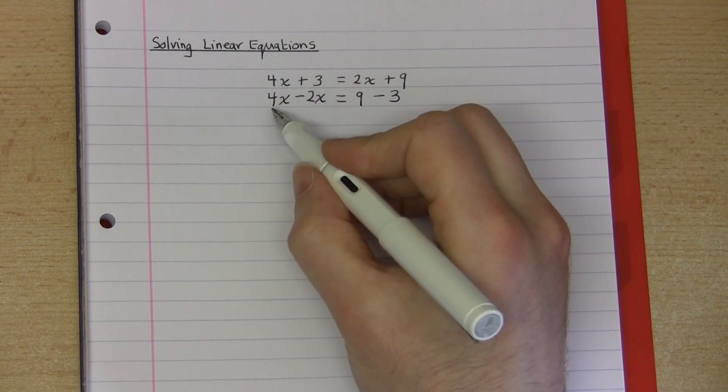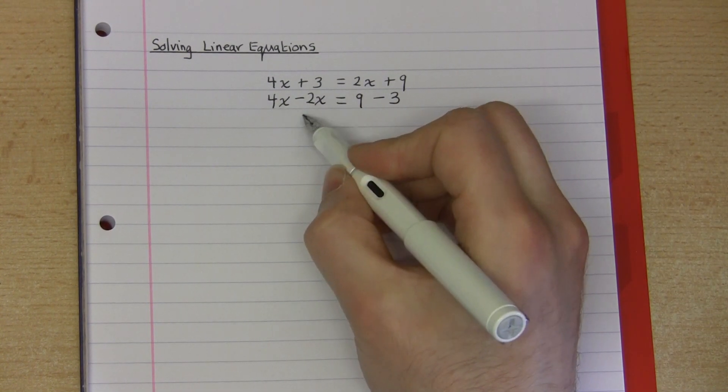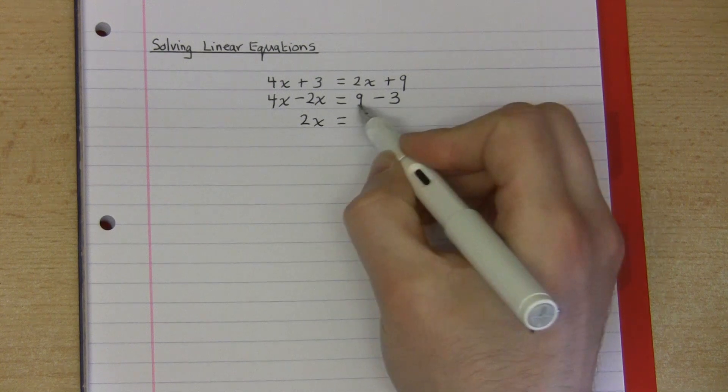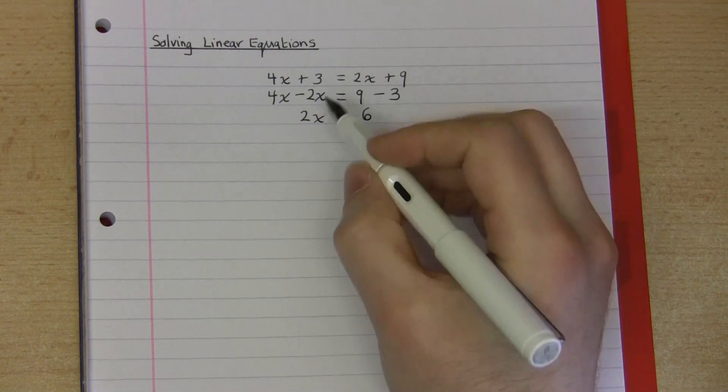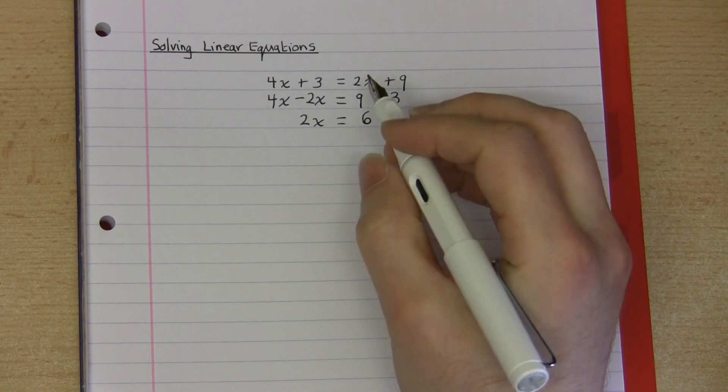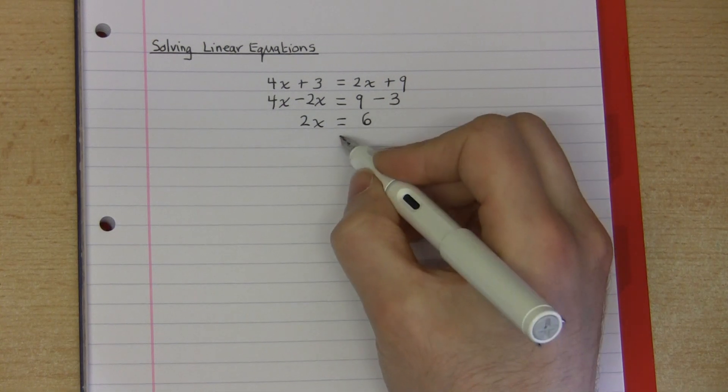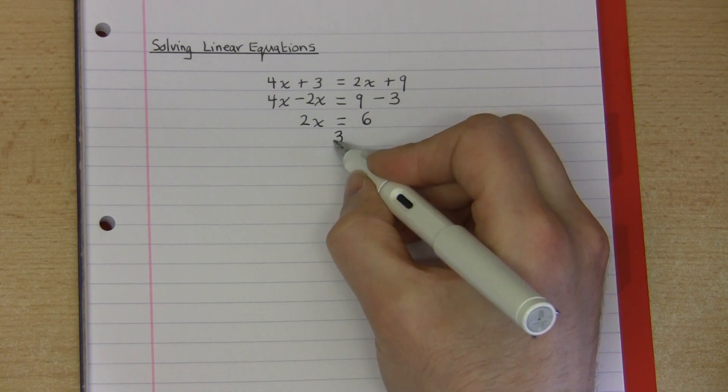I can then collect some like terms: 4x take away 2x is 2x, 9 take away 3 is 6, and if 2x is equal to 6 then x will be equal to 3, and then the solution to this equation is 3.